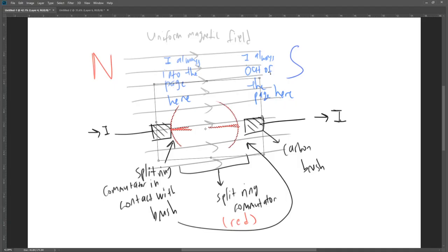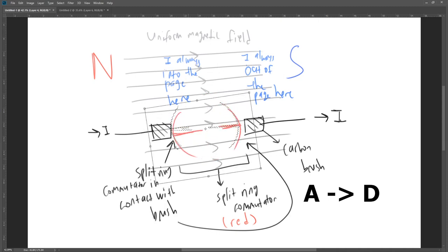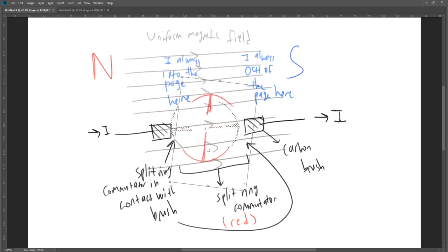The split ring commutator and carbon brushes ensure that every 180 degrees, the direction of current reverses in the coil—from A to D, then D to A, and A to D again, and this cycle repeats. This ensures that the direction of current remains the same for a specific region of space where the coil exists, ensuring that the direction of force acting on the coil is the same on that side, leading to constant rotation.